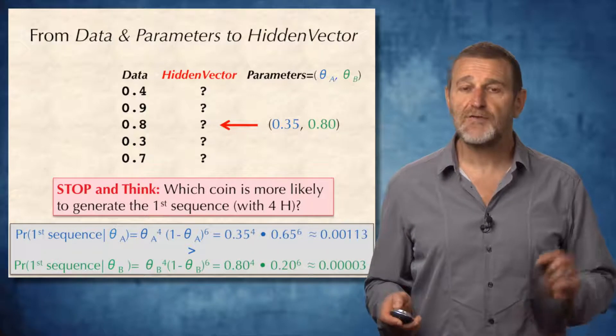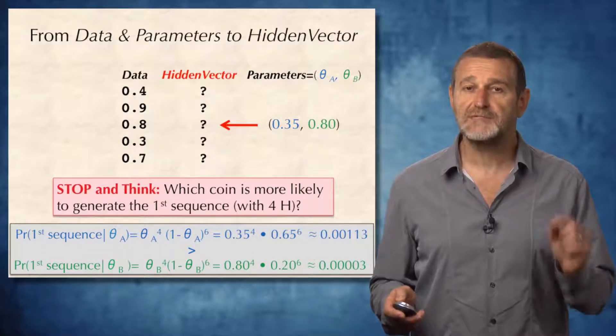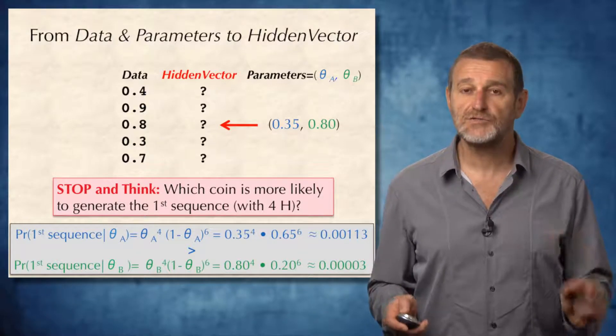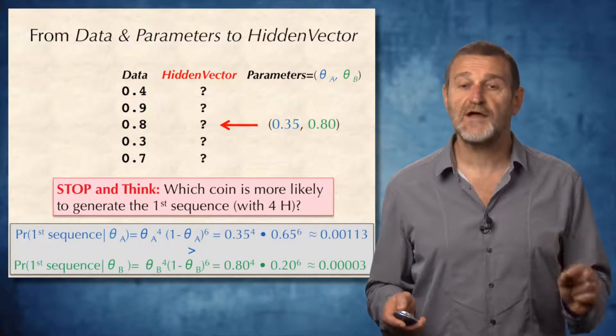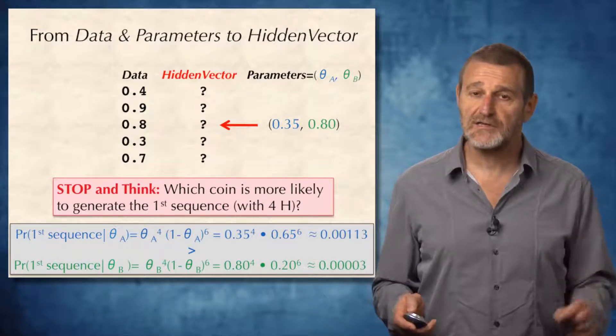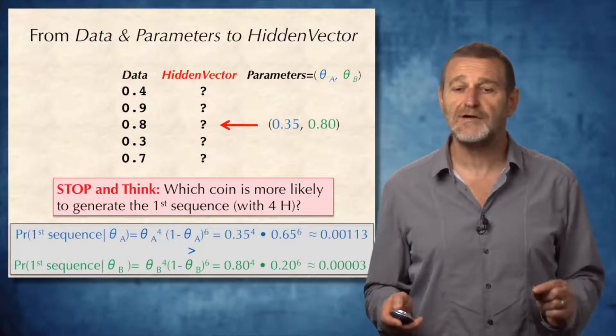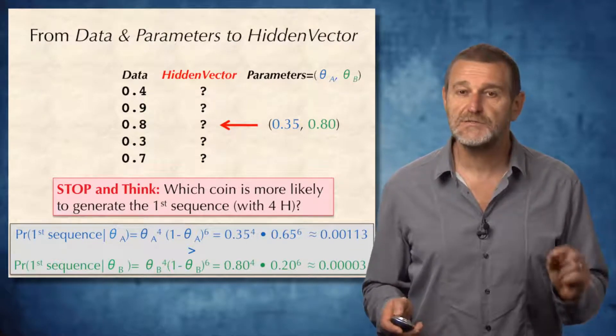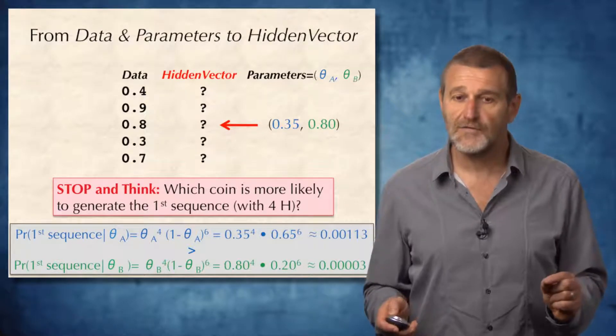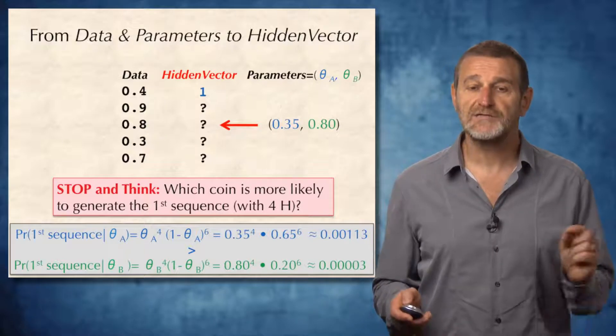Well, we can compute the probability that the first sequence was generated by the blue coin. This probability turned out to be 0.00113. We can also compute the probability that it was generated by the green coin, and it turned out to be a much smaller number, 0.00003. Which coin is more likely? Of course, the blue coin is more likely to generate the first sequence.